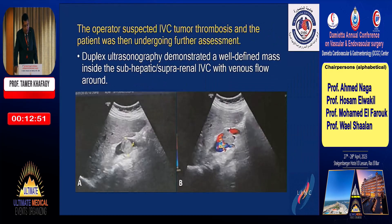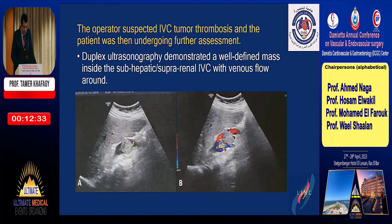The operator suspected IVC tumor thrombosis and the patient underwent further assessment. Repeat duplex ultrasonography demonstrated a well-defined mass inside the sub-hepatic, suprarenal IVC with venous flow around it. This is the mass inside the IVC, and this is the flow around the mass.